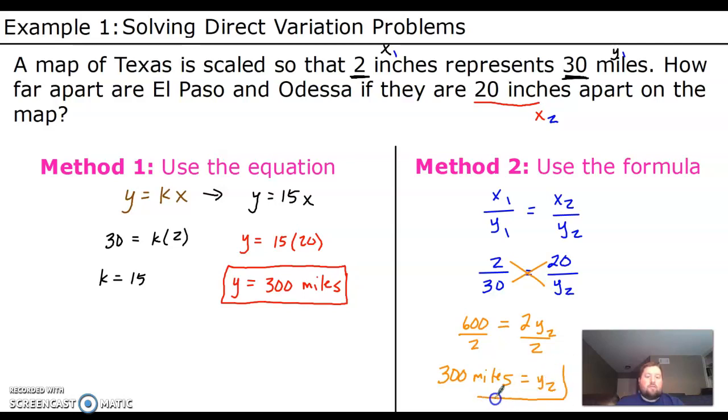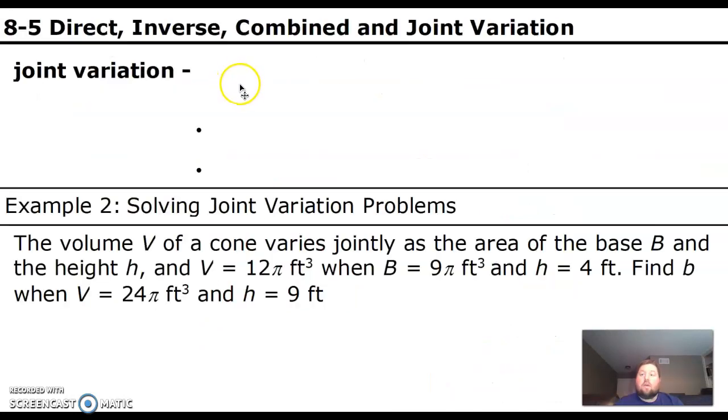So if you're a person who likes memorizing formulas, then method 2 is the way for you. You'll just have to know that's the formula for direct variation. If you're like me and you don't like memorizing formulas, then method 1 is a better use. You'll have to know what the equation is, obviously, but that's more of an algebraic way to solve it out.